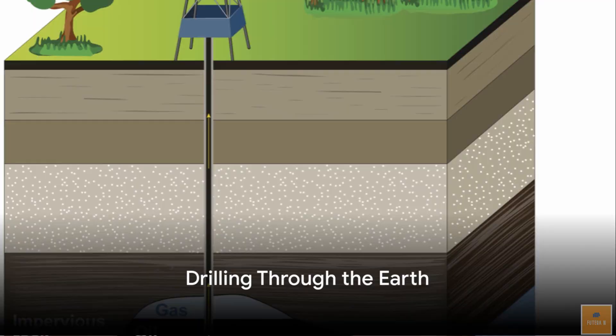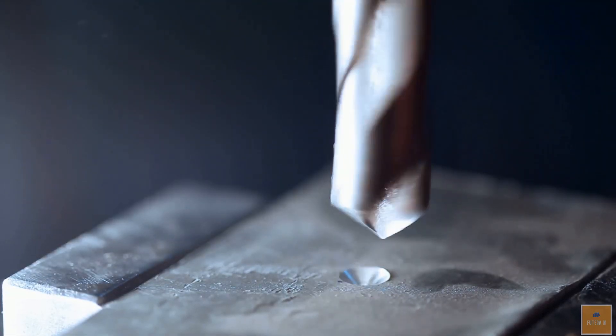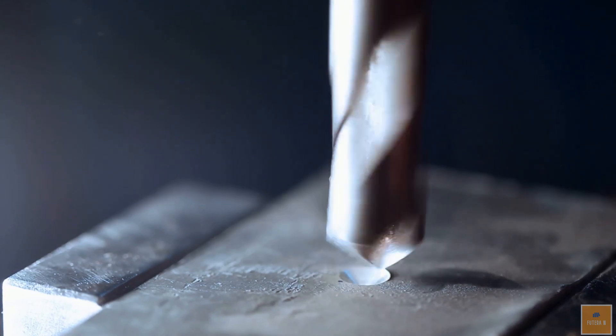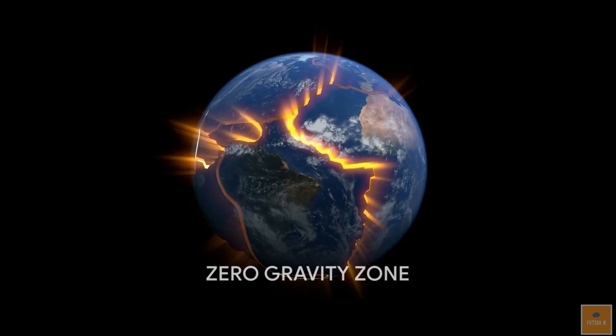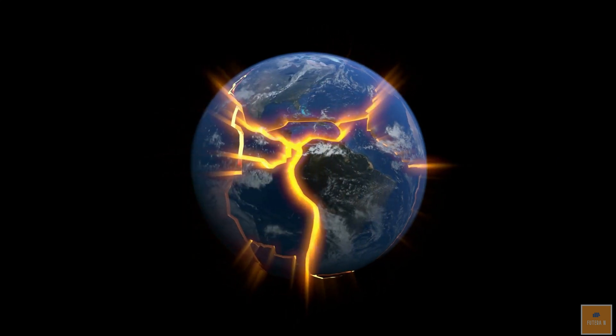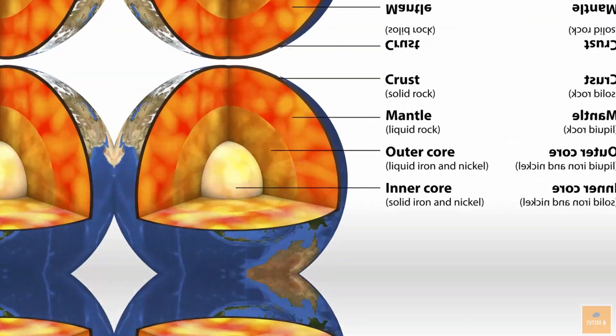If a hole were to be drilled through the Earth, the gravitational force experienced by the drill bit would decrease as it moved toward the center of the planet. At the center, the gravitational force would be zero. As the drill bit continued through the other side of the planet, the gravitational force would increase once again.